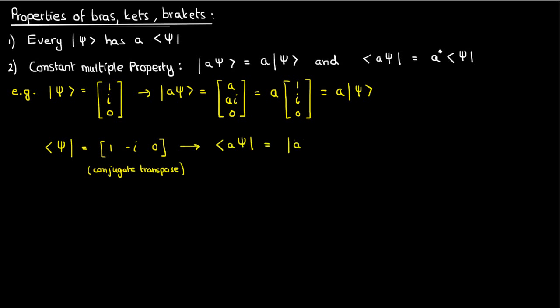So that means if we put the scalar a within the vector psi and take its bra form, we'll get the conjugate of a, the conjugate of ai together, and 0. But the conjugate of ai is just the conjugate of a times the conjugate of i, which is just negative i. So this is what we would have.